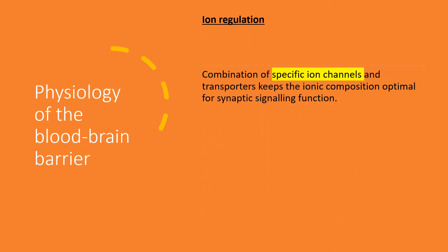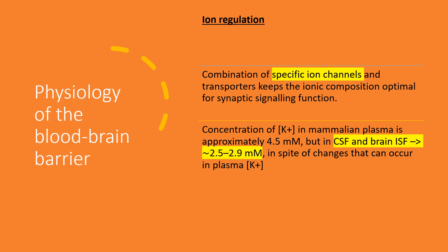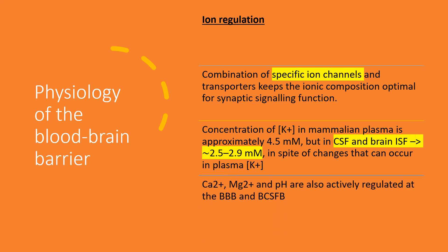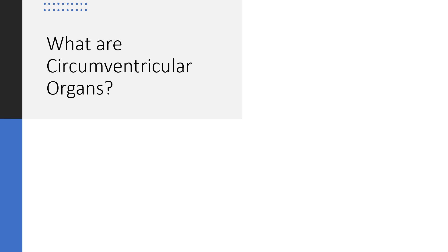Ion regulation is maintained by a combination of specific ion channels and transporters that keep ionic composition optimal for synaptic signaling. The concentration of potassium in mammalian plasma is approximately 4.5 mmol, but in the CSF and brain interstitial fluid it is maintained at 2.5–2.9 mmol despite plasma changes. Calcium, magnesium, and pH are also actively regulated at the blood-brain barrier and blood-CSF barrier.